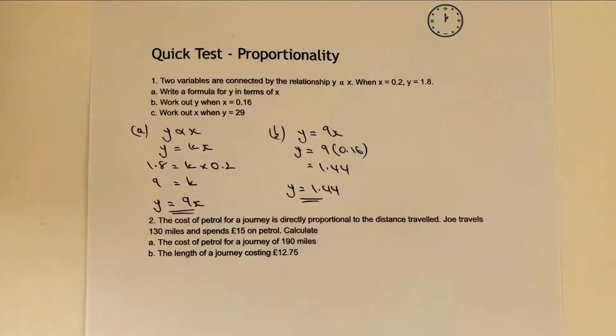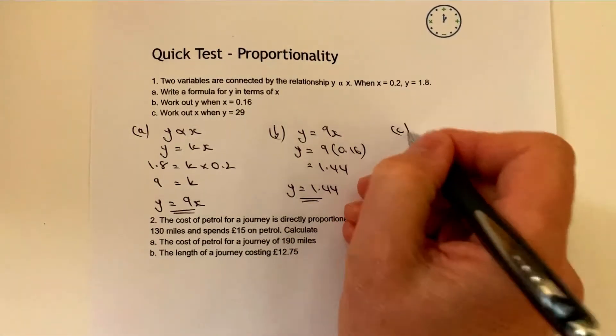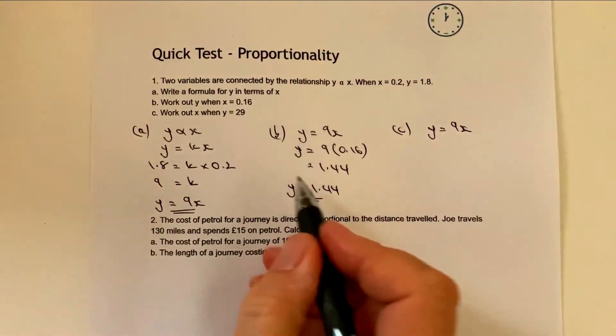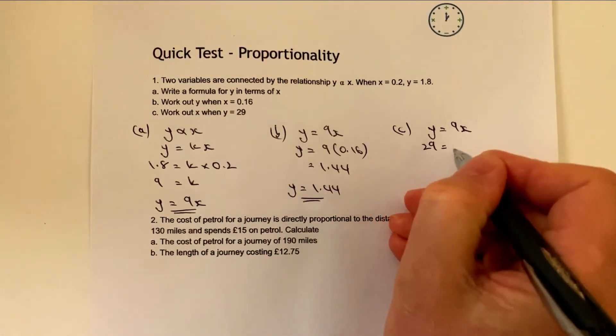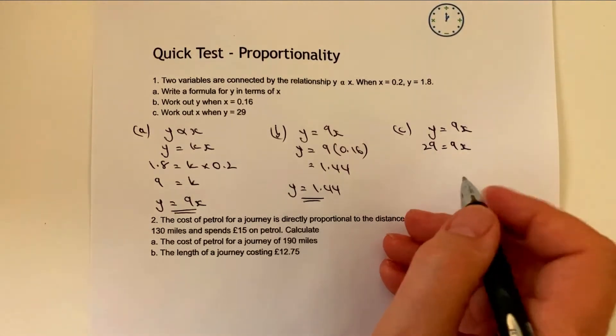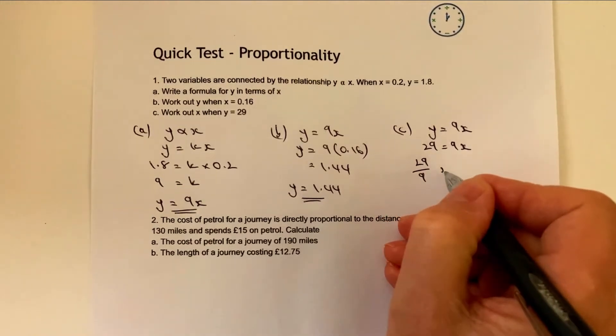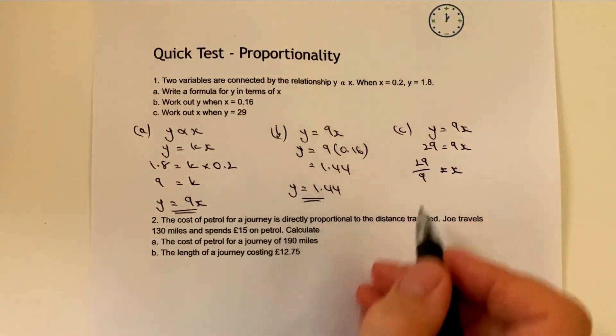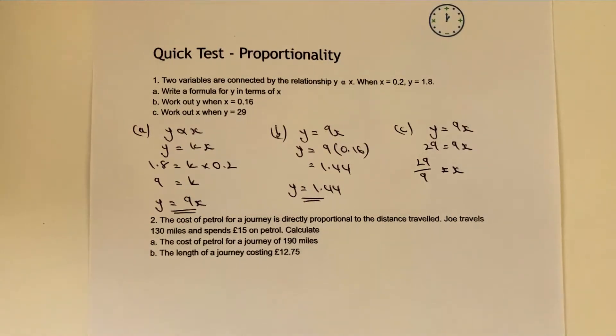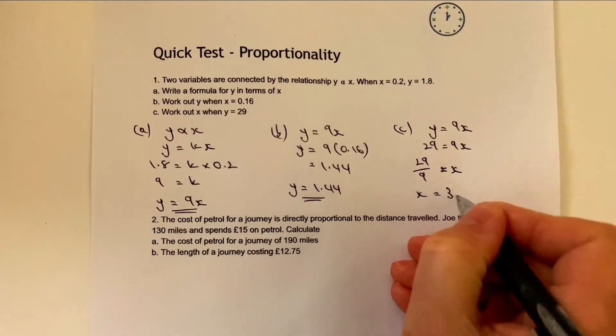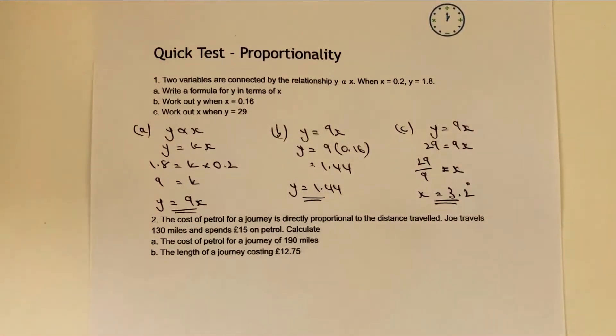Part c, we've got a very similar thing, but a little bit of manipulation because it's a little bit of algebra here. We're going to use the same formula, y equals 9x. But in this case we're told that y is 29. So 29 equals 9x. If I divide through by 9, I'm going to get 29 over 9 equals x. That actually is the answer to the question, it's perfectly fine to leave it at that. However, if you prefer to write it as a decimal, you could put that into a calculator and x equals 3.2 recurring.